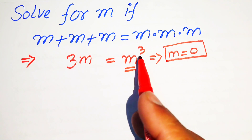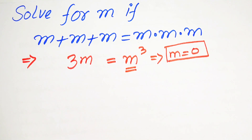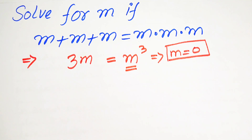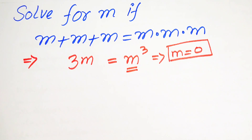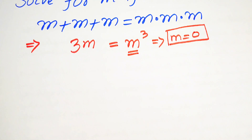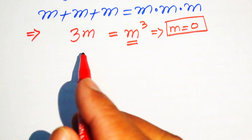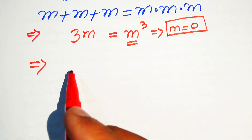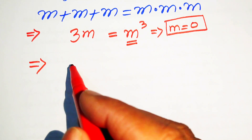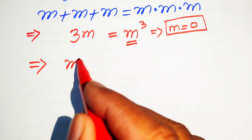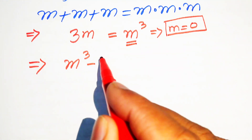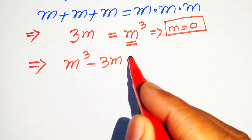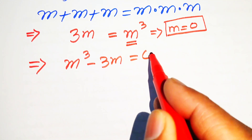The degree of this term is three, which means this equation has three roots, so we need some working to find all three roots. First, we move 3m to the right hand side, giving us m cubed minus 3m equals zero.